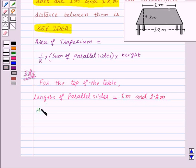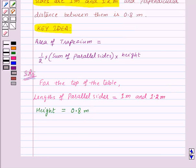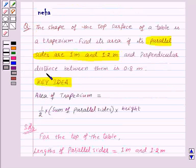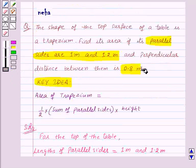Also the height of the top of the table that is trapezium is 0.8 meter. As in question we are given that the perpendicular distance between the parallel lines is 0.8 meters.